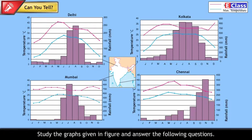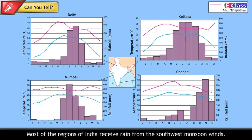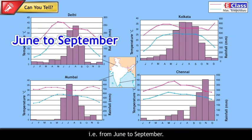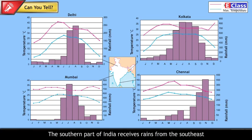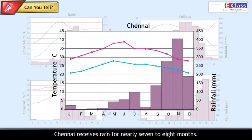Can you tell? Study the graphs given in the figure and answer the following question: What difference do you find in the rainy seasons of Chennai and other cities of India, and why? Most regions of India receive rain from the southwest monsoon winds for nearly 4 months, from June to September. The southwestern part of India also receives rains from the northeast monsoon winds. Chennai, located in the southern part of India, receives rain for nearly 7 to 8 months, from May to December.